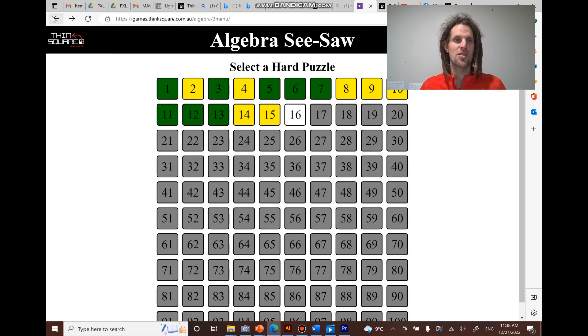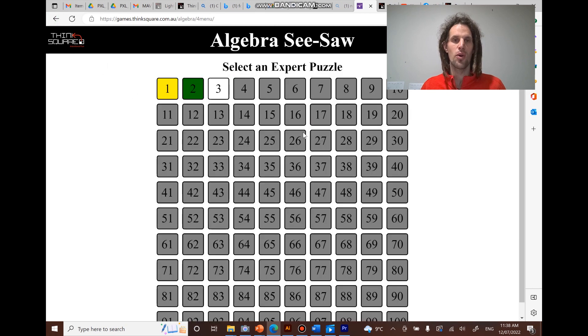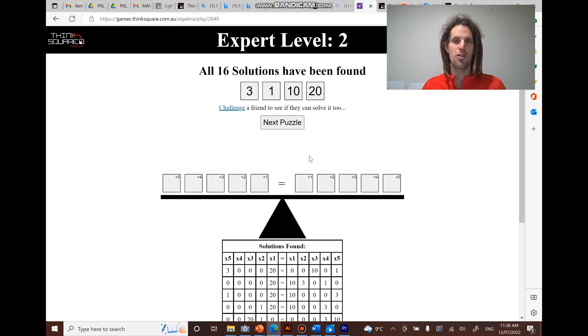So the hard or the most difficult challenges have 4 numbers. And sometimes, you know, 3 of them will be on one side and one on the other. And they have a lot of possibilities. So this puzzle had 16 possible solutions, which I'm a nerd and I sat down and found all of them.